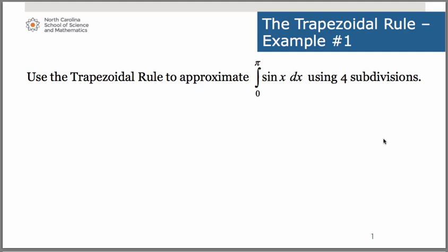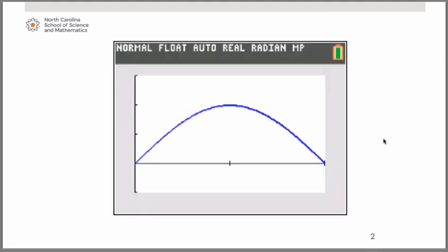So let's take a look at the graph of the function first and just talk about what it is we're trying to do. So here we have a graph of the function sine of x. Zero is on the left, pi is here on the far right, pi over 2 is right here in the middle. And we want to use four subdivisions to try to approximate the area under this curve.